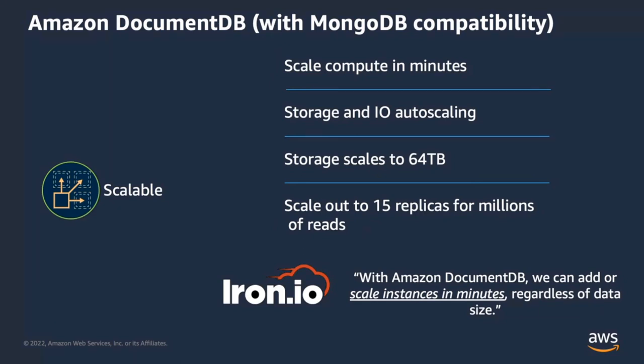DocumentDB's architecture decouples storage and compute. Separation of storage and compute allows you to scale both components independently. You can scale compute horizontally or vertically within minutes, regardless of the amount of data stored in the cluster. This is very important because scaling in DocumentDB is not a function of your data volume. Storage and I/O scale automatically from 10 gigabytes all the way up to 64 terabytes, in 10-gigabyte segments, so customers do not have to worry about provisioning EBS volumes or scaling from storage area networks. The compute instances scale out to 15 read replicas within minutes, allowing you to perform millions of read operations per second.